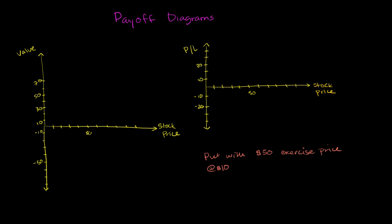If I were to buy a put option with a $50 exercise price, and if I were to buy it for $10, then the value of my position, the payoff for that put option at the expiration of the option, depending on what the stock price is at expiration, would look like this.